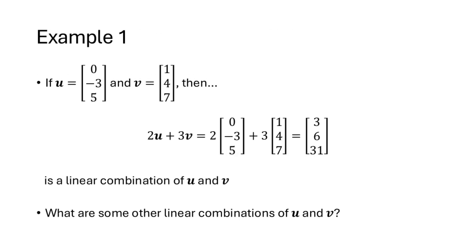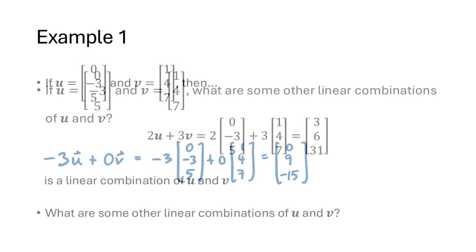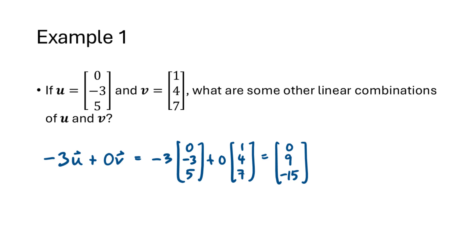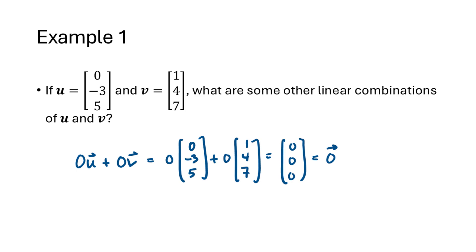Let's look at some examples. If u is the vector (0, -3, 5) and v is the vector (1, 4, 7), then we can form the linear combination 2u + 3v, which works out to be (3, 6, 31). Another example: choosing scalars -3 and 0 gives the linear combination -3u + 0v, which works out to be (0, 9, -15). This illustrates that scalars are allowed to be 0 or negative. In fact, we could choose both scalars to be 0, giving 0u + 0v, which is the zero vector.